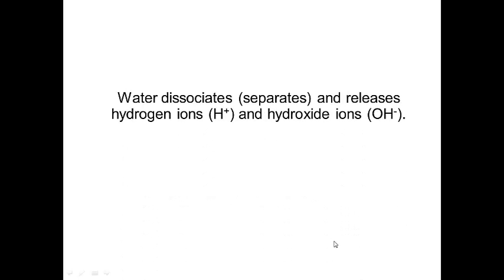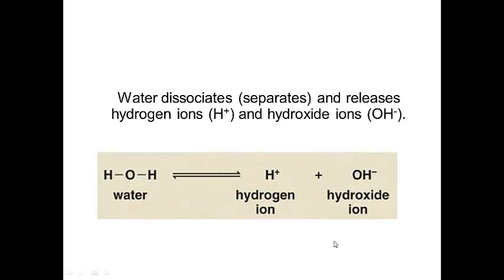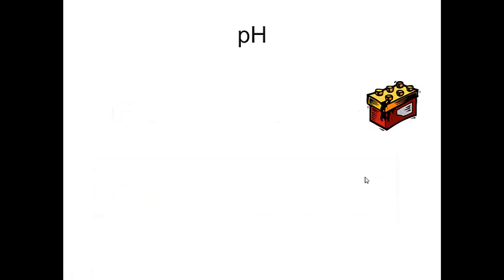So water can dissociate or separate into its hydrogen ions and hydroxide ions. When it does that, we get our hydrogen ions and our hydroxide ions. It will do that sometimes when it is dissolving substances. And when we do that, we can end up with changes in pH.